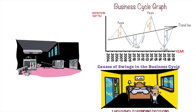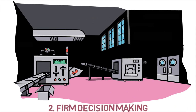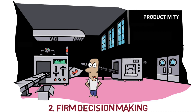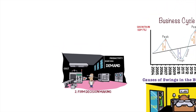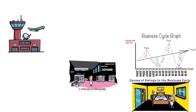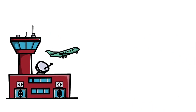The second cause is firm-level decision making. Firms make decisions on whether to spend in the economy based on their cost structure. Key factors include productivity and decisions on whether to invest in research and development, rising costs which may force firms to reduce economic activity, increasing inventories prompting cutbacks in investment, and falling demand which may require firms to reduce output and their workforce.